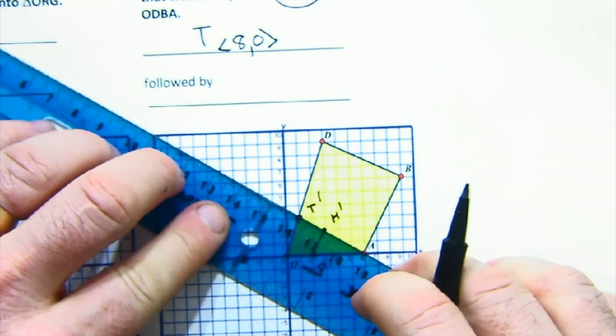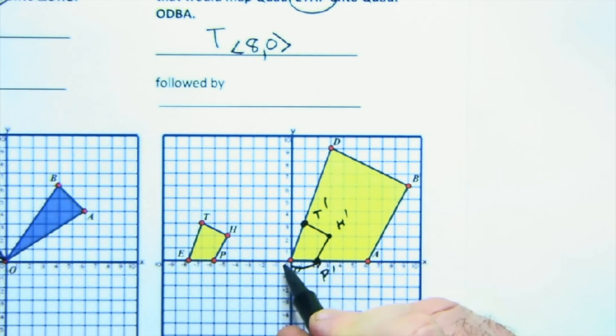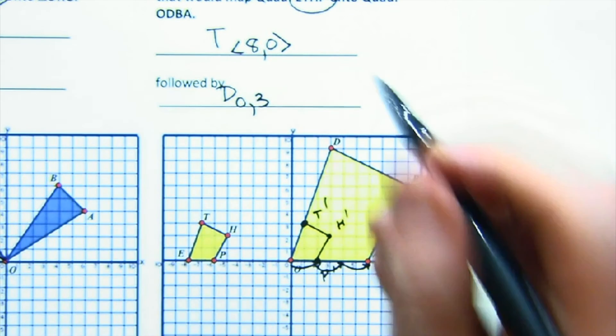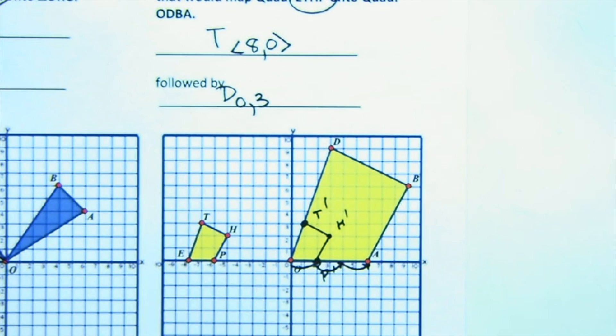And now I could nicely dilate that. And let's see how big. So there's an easy way to do it. There's two, four, six. So we're going to dilate this about the origin three times bigger. And it will land onto our friend there.